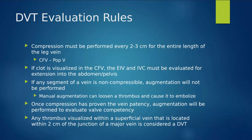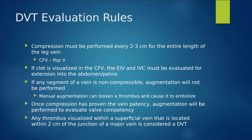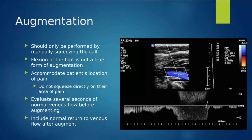Any thrombus visualized within a superficial vein located within two centimeters of joining with a deep vein is going to be considered and treated like a DVT. So if the greater saphenous vein has a clot right next to where it joins the femoral vein, we consider that a DVT because of how closely related they are. Augmentation is only done after we've proven patency by compressing everything first — then we go back and perform our color and Doppler pictures.